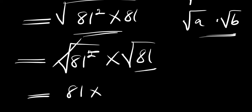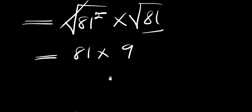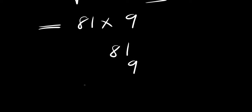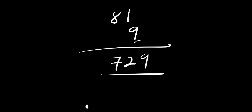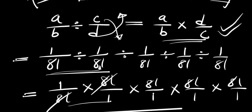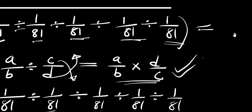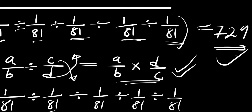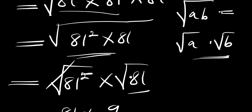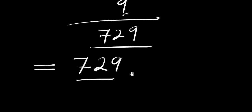81 times the square root of 81 — here the square root of 81 is 9 — so we now have 81 times 9. Multiplying: 9 times 1 is 9, 9 times 8 is 72, so we have 729. The final answer is 729. So we can agree that the square root of 1 over 81 divided by 1 over 81, divided by 1 over 81, divided by 1 over 81, and divided by 1 over 81, divided by 1 over 81 equals 729. That is it for this video — please don't forget to share this video with your friends so that they will learn some of these tricks. Thank you and goodbye.